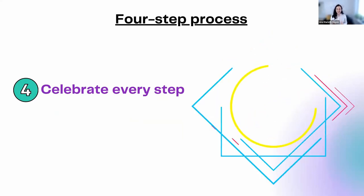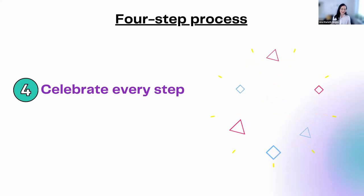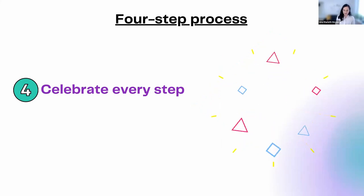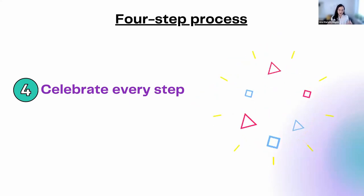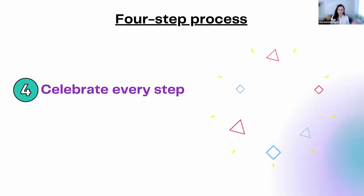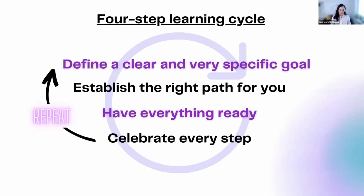Last but not least is to celebrate every little step. The aim is to keep yourself accountable — celebrate that you showed up today and learned what you scheduled for today. This could mean dancing in your kitchen, buying or making your favorite drink, calling your best friend and sharing what you accomplished, going for a walk, or even spending 15 minutes cuddling your dog or cat. This is a cycle you will repeat over and over, accomplishing one small goal at a time.